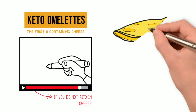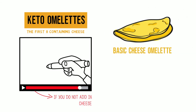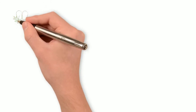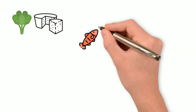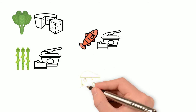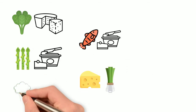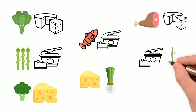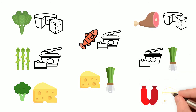The first one we start with is a basic cheese omelette. You can vary that by using goat, sheep, cow's cheese, or buffalo mozzarella. Next we have spinach and goat's cheese; smoked salmon and cream cheese; asparagus and cream cheese; cheese and chives; broccoli and cheese; ham and feta cheese; and cream cheese and chives.